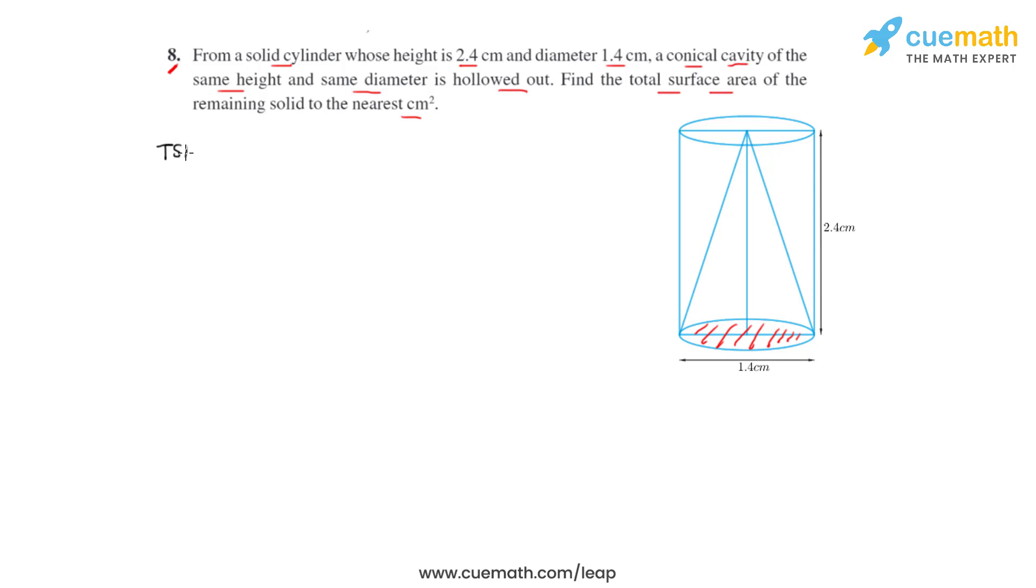Therefore, the total surface area of the remaining solid after hollowing out will be equal to the curved surface area of the cylinder plus the base area. That is, we are just calculating one of the base area which is a circle, plus the curved surface area of cone.